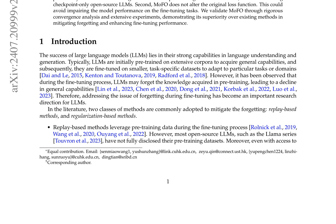MoFo is a replay-free and regularization-free method that iteratively selects and updates only the parameters with the top alpha percent largest momentum magnitudes within each block. The blocks refer to the parameters of different parts of the network, such as weight matrices and bias terms.